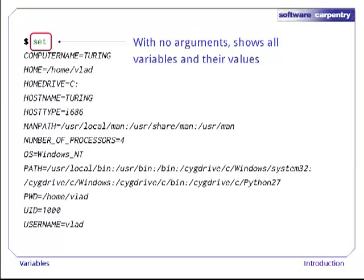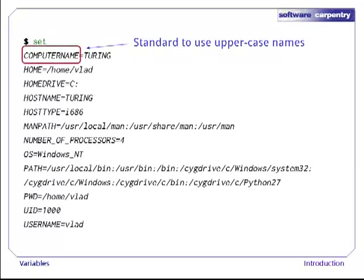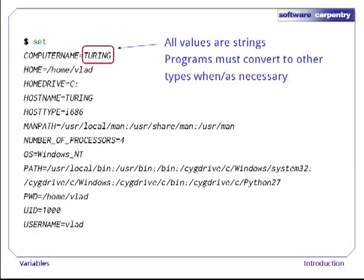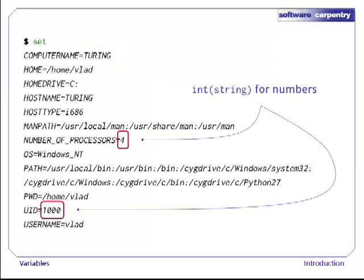Every variable has a name. By convention, variables that are always present are given uppercase names. For example, if a program wanted to find out how many processors the computer had, it would convert the number of processors variable from a string to an integer.